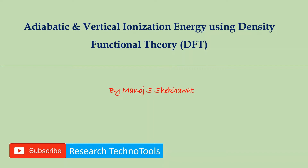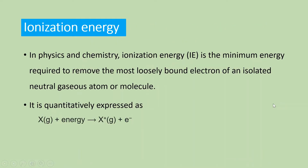In this video, first I will give some theoretical introduction of ionization energy, then we will determine the ionization energy of an amino acid, glycine, using an ORCA input file. Ionization energy is the minimum energy required to remove the most loosely bound electron of an isolated neutral gaseous atom or molecule.